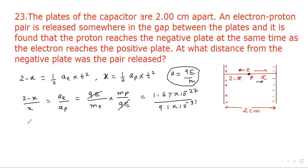So this will become 2 minus x upon x equal to 1.67 divided by 9.1 times 10 to the power of 4. We can cross multiply so 2 minus x times 9.1 equal to x times 1.67 times 10 to the power of 4.